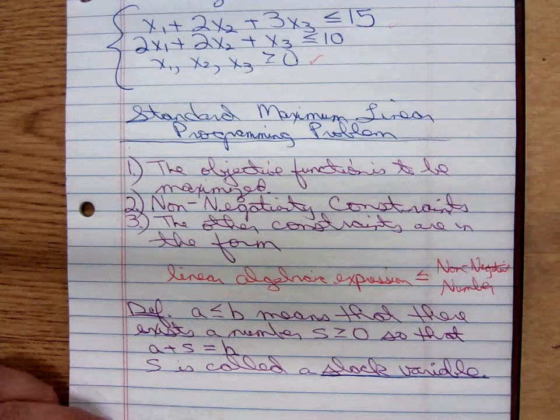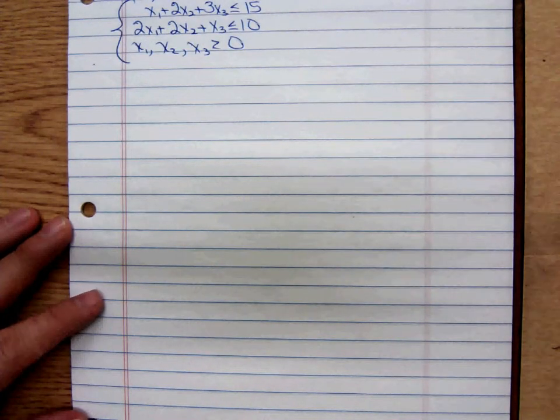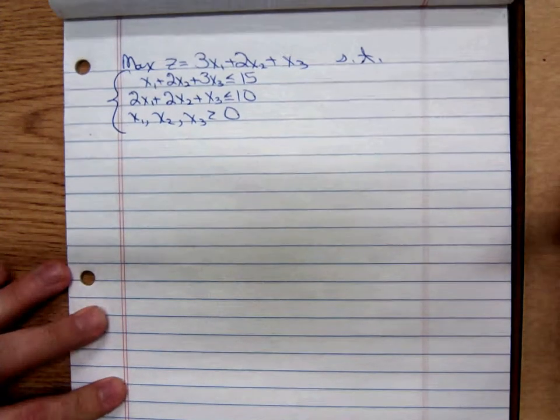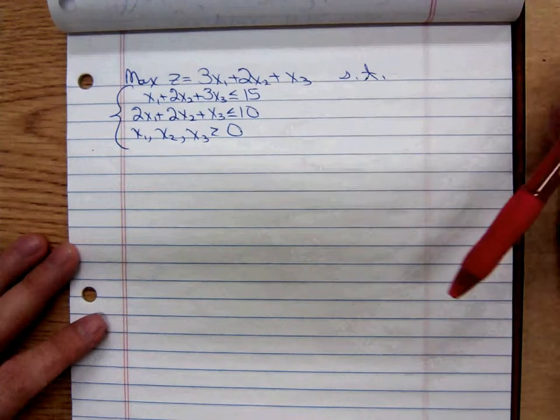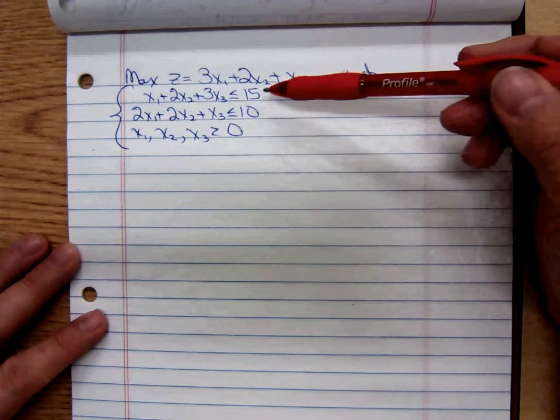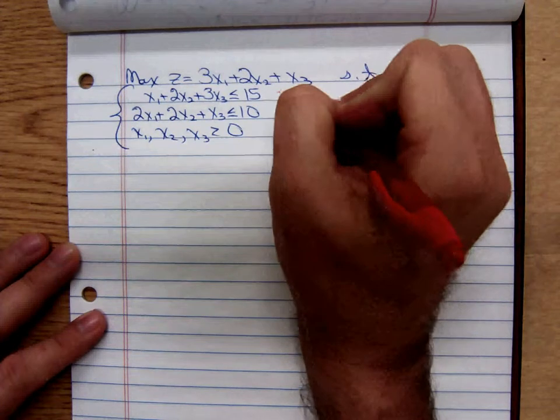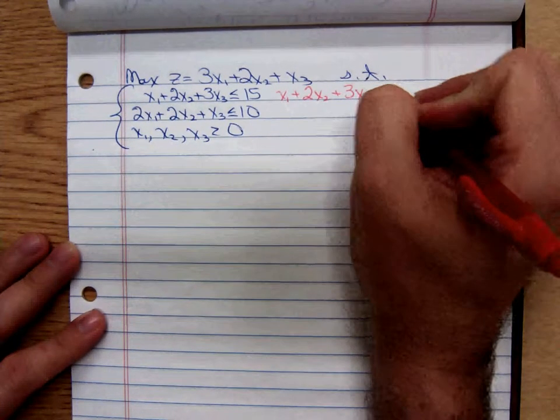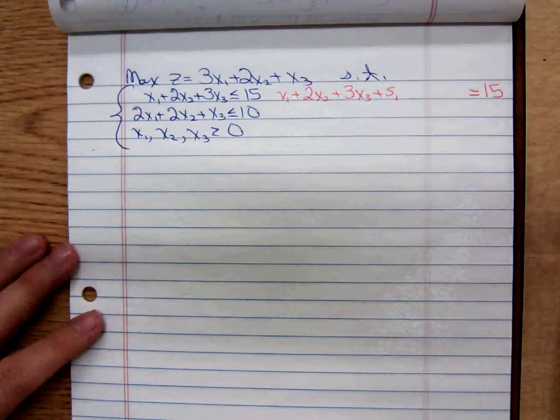So, with that in mind, let's move over here. I took the same problem and I re-copied it over here. Let's rewrite the two less than or equal to constraints. Oh, let me move that down some. Let's rewrite this using the definition of less than or equal to. Let's write it as an equation. The first one becomes x1 plus 2x2 plus 3x3 plus slack1 is equal to 15. Notice I left some space there.